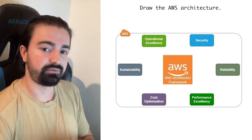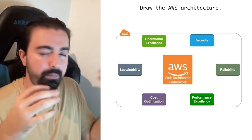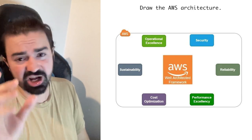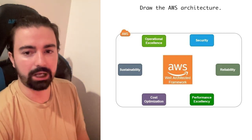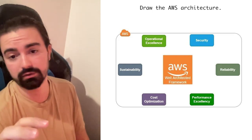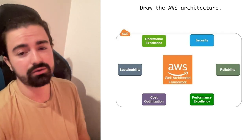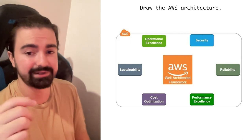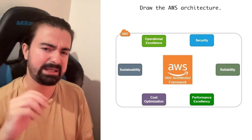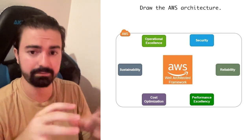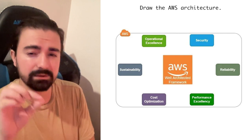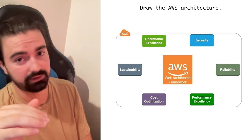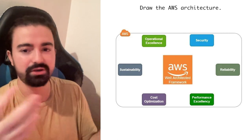If something is wrong with an instance, it will restart or terminate and create a new one. The fourth pillar is Performance Efficiency — using computing resources efficiently to meet system requirements and maintaining that efficiency as demand and technology evolve. We use a load balancer, auto scaling groups, and Redis caching from AWS to meet this pillar. The fifth pillar is Cost Optimization — running systems to deliver business value at the lowest price point. We use auto scaling groups to use only the needed number of instances, and ElastiCache for Redis to avoid querying the database every time.